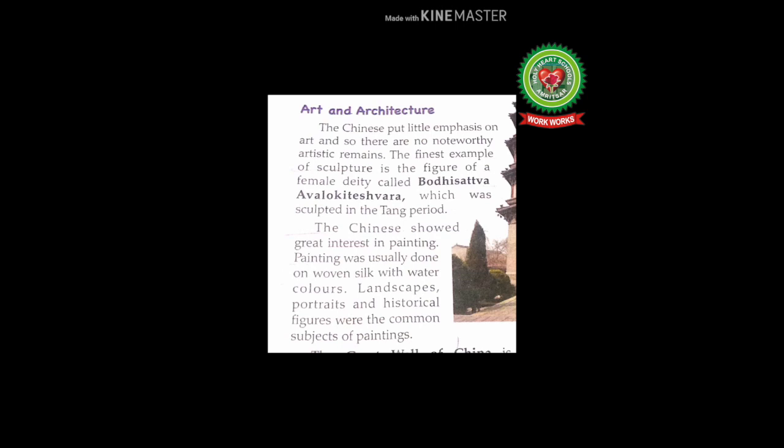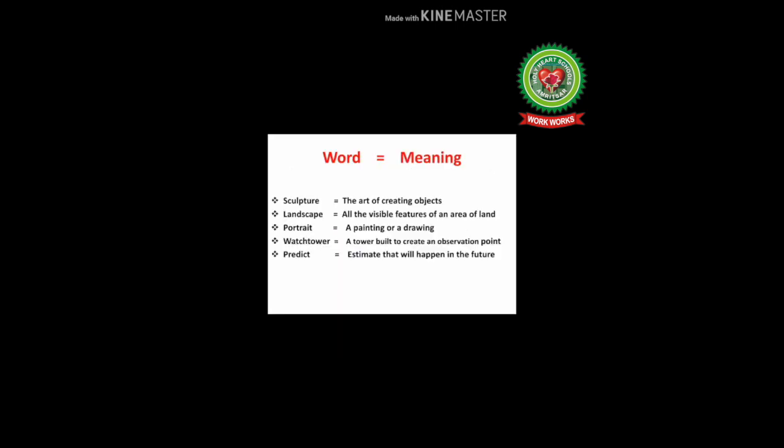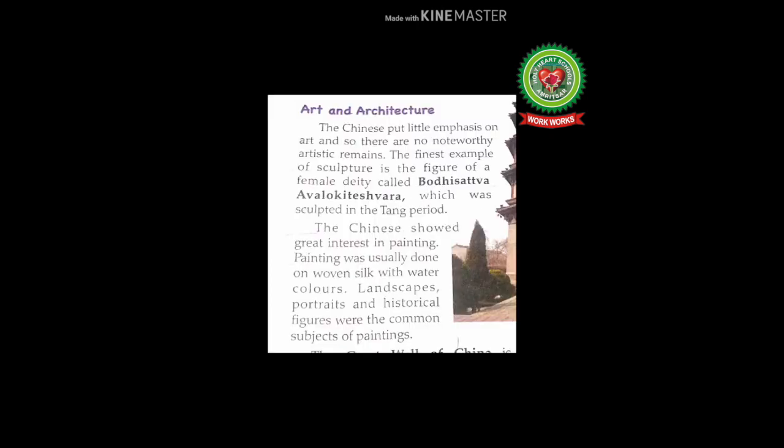Landscapes, portraits, and historical figures were the common subjects of paintings. Landscape means all the visible features of an area of land; portrait means a painting or a drawing. The Chinese did their paintings on woven silk with water colors, with common subjects being landscapes, portraits, and historical figures.